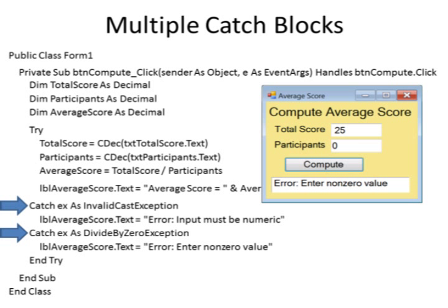We can use multiple catch blocks to separate those two different types of errors. One catch handles an invalid cast exception and puts out the message: error, input must be numeric. We can also have a catch for a divide by zero exception, which puts out the message: error, enter a non-zero value.